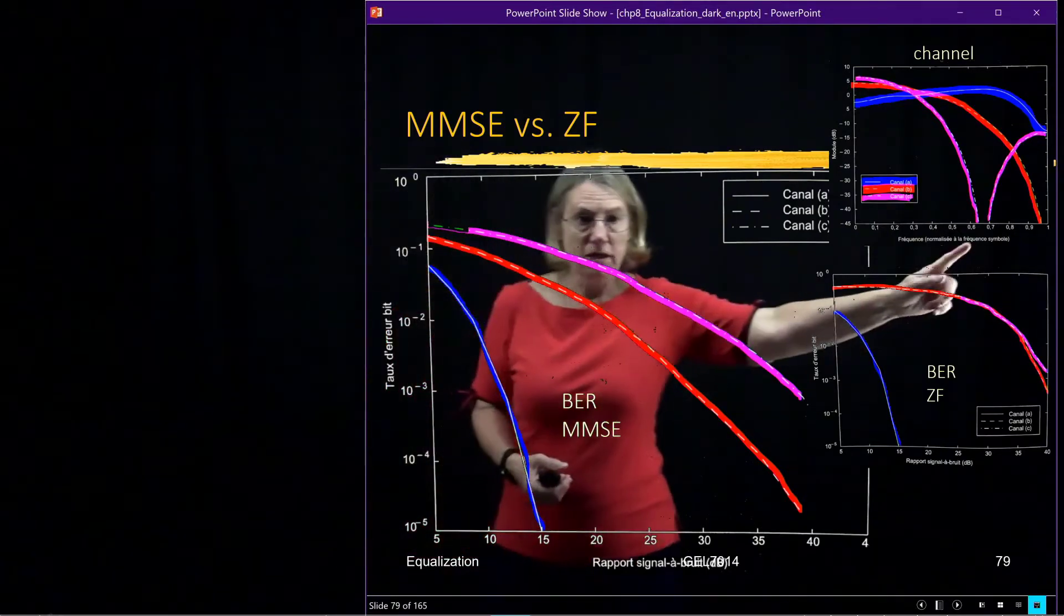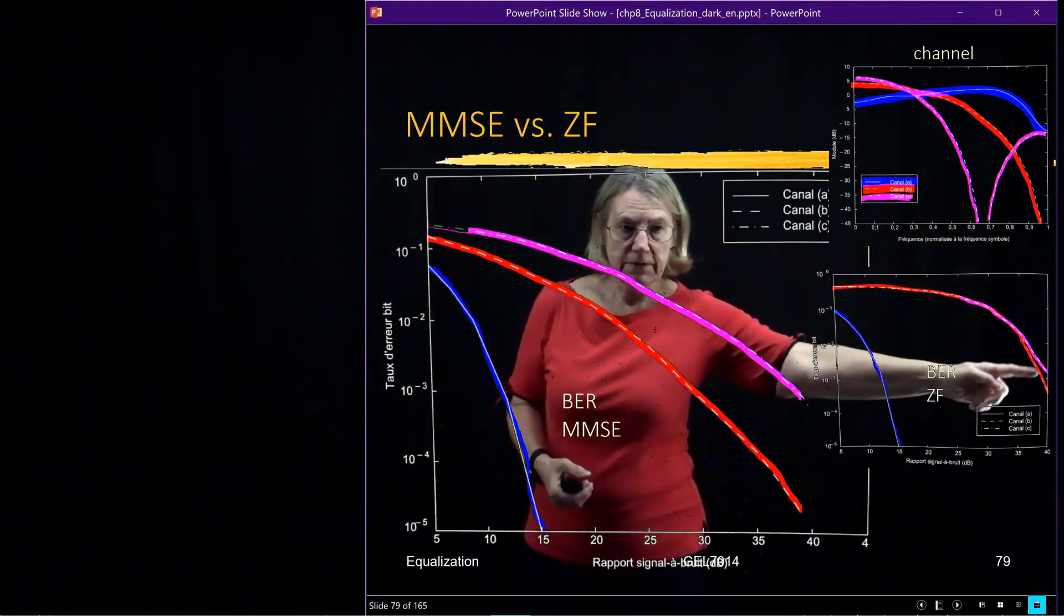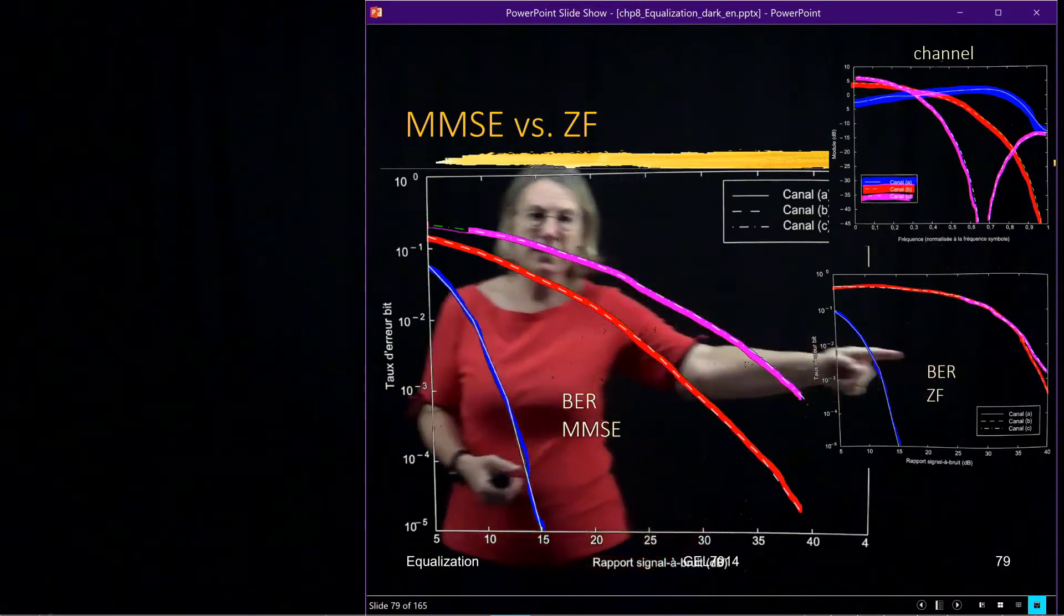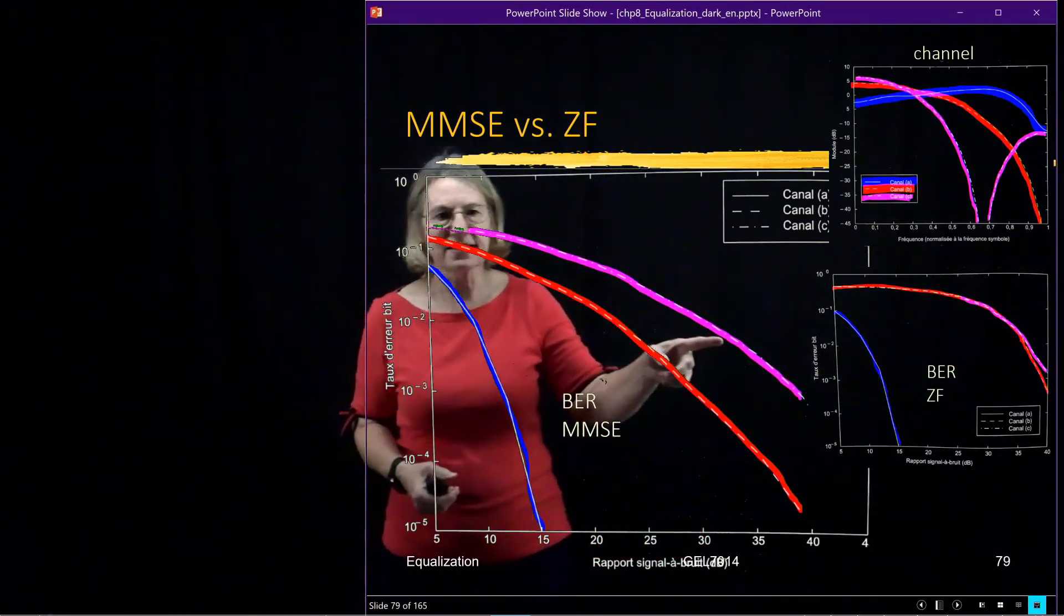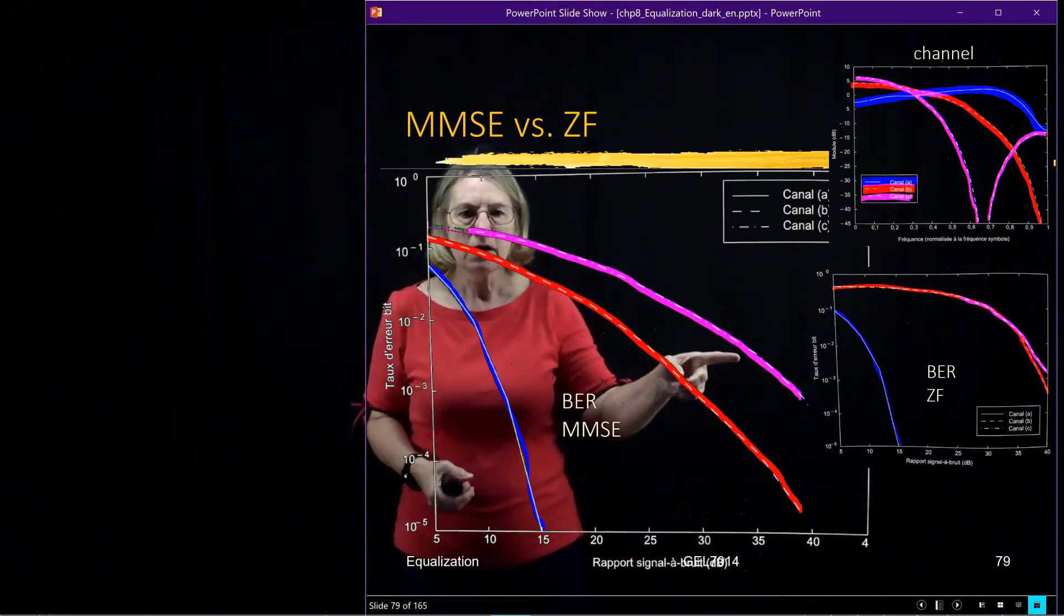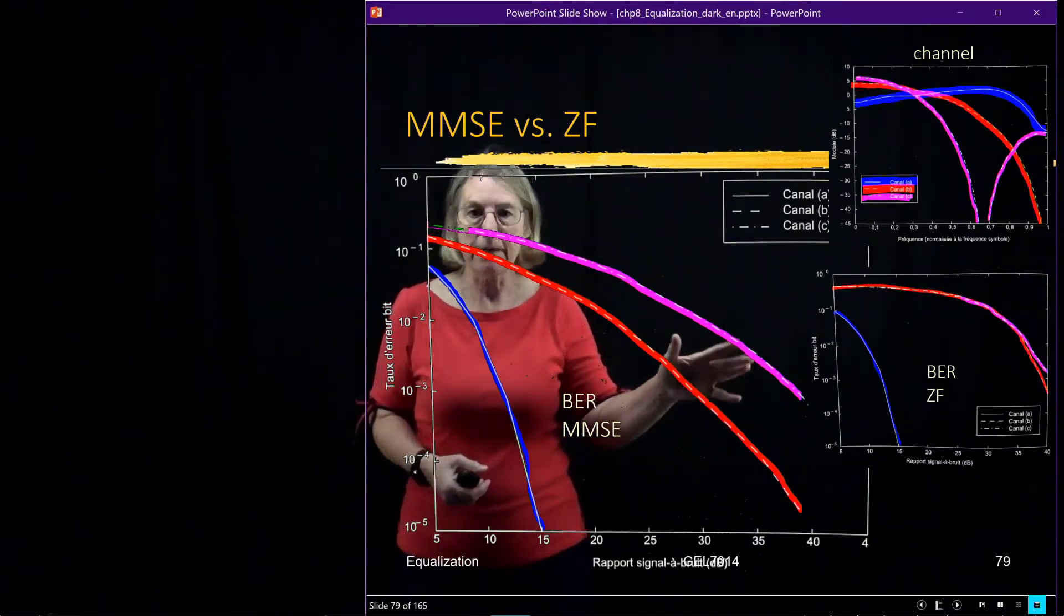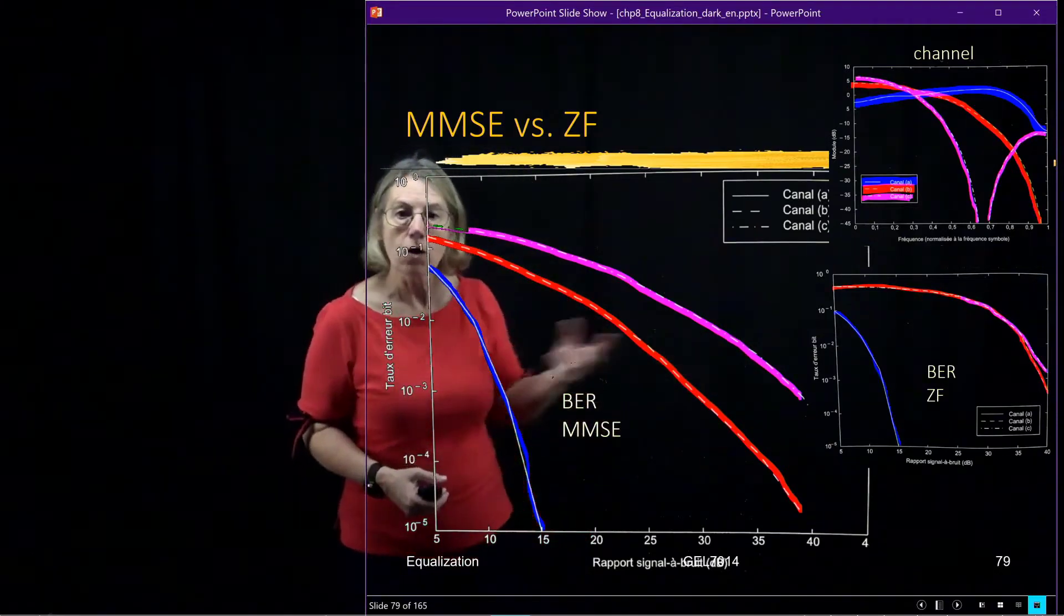So the pink has got that null. That null was a bit worse, but the two were pretty bad. But now we can see the MMSE is really spreading these things out. And it's still pretty bad for the pink, a little bit better. But the red, we've gone a long way with the MMSE.